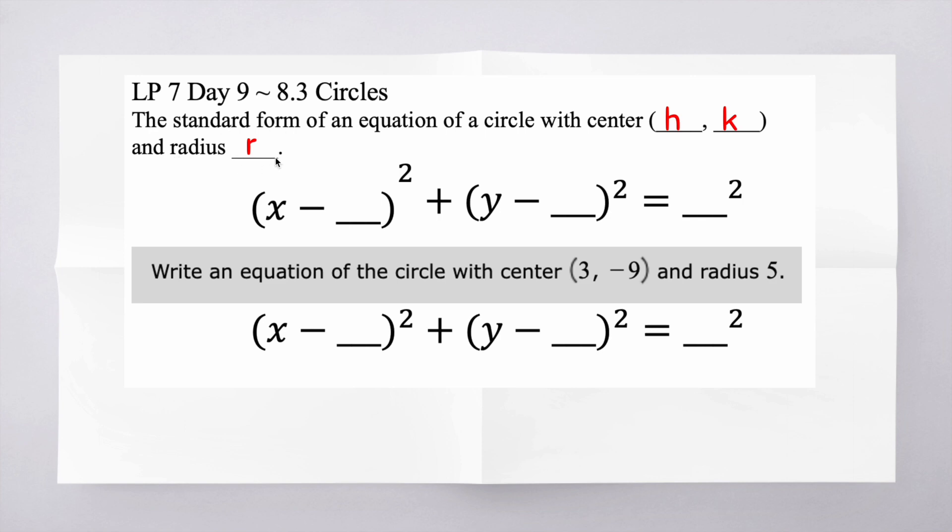Remember, radius is the point that goes from the center of the circle to the side. So the standard form is just (x - h)² + (y - k)² = r².